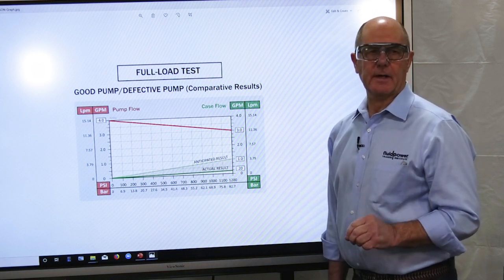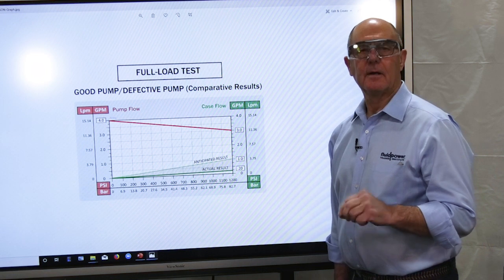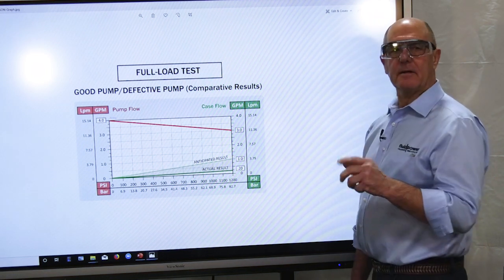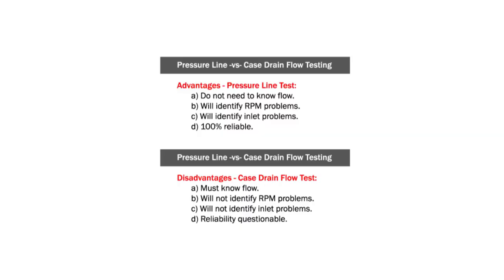Even if a pump case flow test were scientific, I would opt for a pressure line test over a case flow test. With a pressure line test, I do not need to know the pump's rated flow — if I have a 10 GPM pump and I lose 2 gallons per minute, I know that is 20% at load. However, on a case flow test, if I have 2 gallons per minute coming out of the case drain line and I don't know the pump's rated flow, that number is unknown and therefore meaningless.